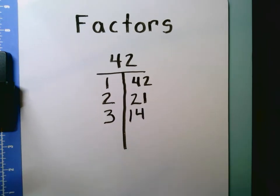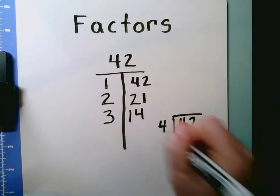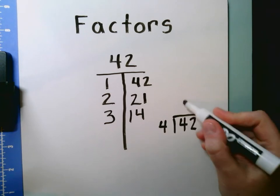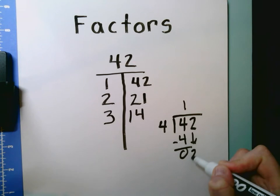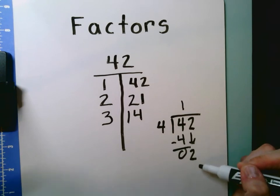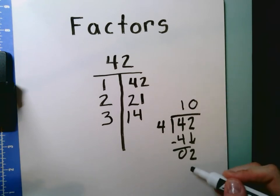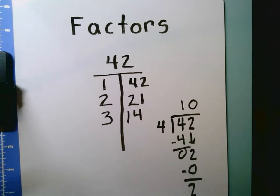The next number on my number line is 4. I'm not sure if 4 goes into 42, so I can put 42 into my calculator and divide by 4, or do 42 divided by 4. 4 times 1 is 4, and I bring down my 2. I only have a 2 left over — there's nothing I can multiply by 4 to get to 2. I have a remainder of 2, so 4 is not a factor because I have a remainder when I divide.